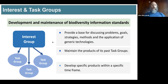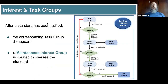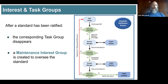What happens after a standard is ratified: an interest group might create a task group that says we're going to create a standard, and it goes through a process to create that standard. But what we're going to talk about now is what happens after, because that's what this maintenance group is all about. So the task group that created the standard disappears because it did its job, and a new interest group is spawned, based directly around the standard that was just created. So it's there now to oversee and maintain what was produced.